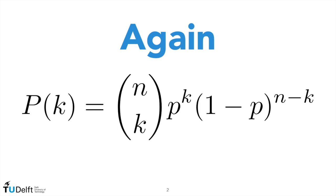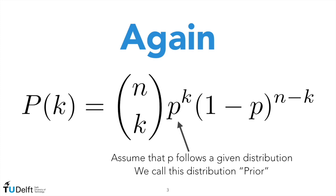Our binomial distribution tells us the probability of observing k defaults in our portfolio. Our goal is to estimate small p — the probability of default of each single counterparty. We want to use Bayesian statistics, that is to say, our a priori information for the actual computation of this small p. The idea is to assume that small p follows a given distribution, called the prior distribution in Bayesian statistics. This prior distribution represents our beliefs about the behavior of small p, and typically these beliefs can be the results of experts' judgments — recommendations from economists, financial experts, and so on.